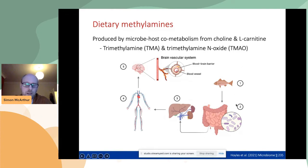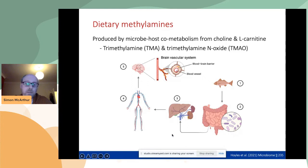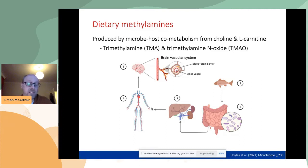Microbes metabolize choline into TMA. TMA is then taken up by the portal vasculature into the host liver, where flavin monooxygenase converts it into TMAO. TMAO then moves into the circulation — and so does TMA. There is both TMA and TMAO present in the whole circulation.